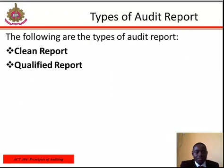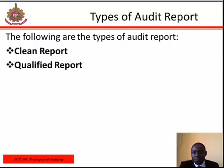The types of audit reports. We have the clean report and the qualified report. The clean report is also known as the unqualified report. It is given by the auditor if he is satisfied with the fairness of the balance sheet, profit and loss account, and all content of the financial statement, and he is satisfied with the evidence, documents, and explanation given by his clients.